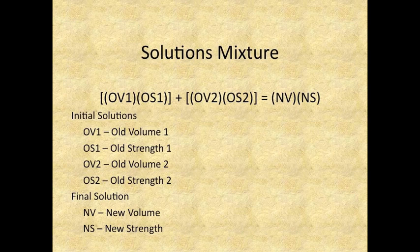So you have an old volume 1 which is the old volume 1, old strength 1. That's part of the first solution. The second information is old volume 2 and old strength 2. That's part of the second solution you are mixing together. So you're mixing together 1 and 2 to make the new volume and the new strength.